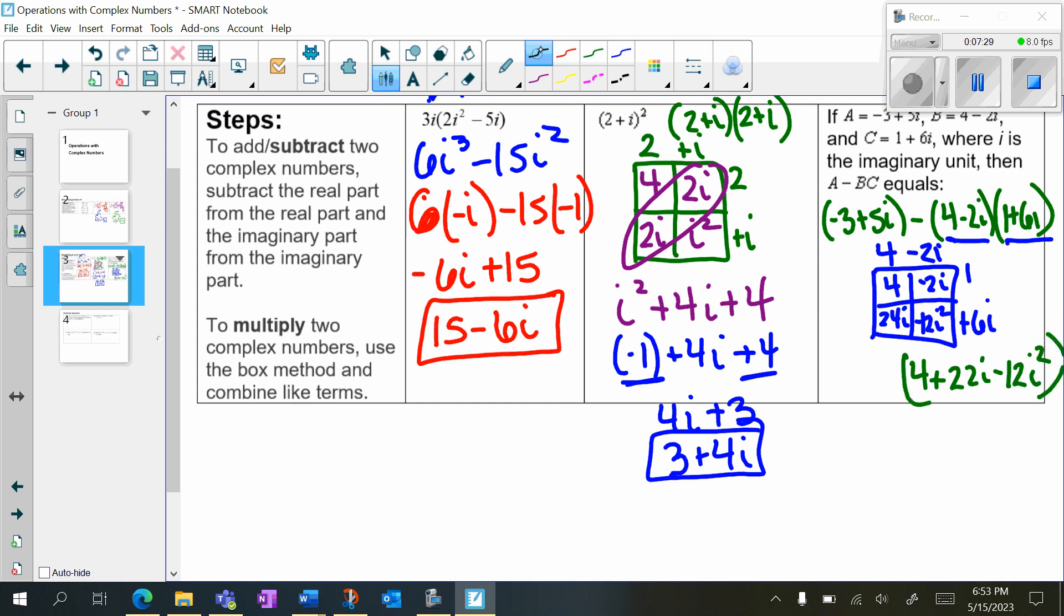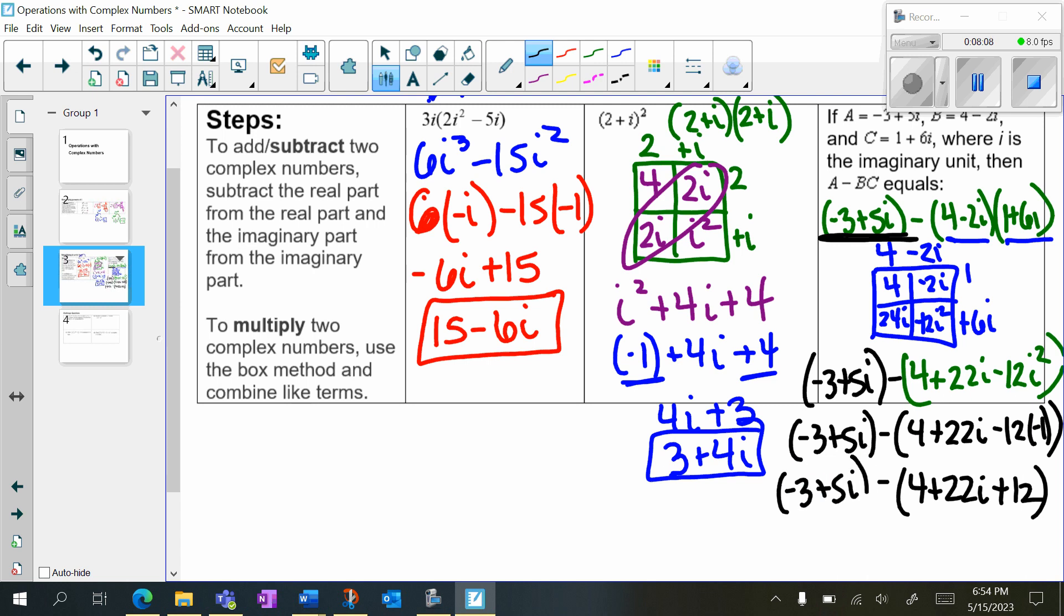So that's our product. But don't forget, we have this in the front, our negative 3 plus 5i, minus that. Now, don't forget that i squared is negative 1. So I'm just going to rewrite this again. So I'm going to have 4 plus 22i minus 12 times negative 1. I'm going to bring this down again. So I'm going to be left with 4 plus 22i plus 12. So I'm going to write down the negative 3 plus 5i.